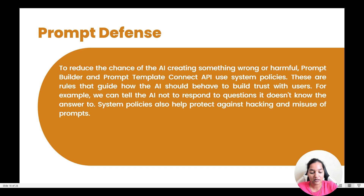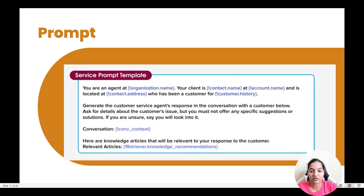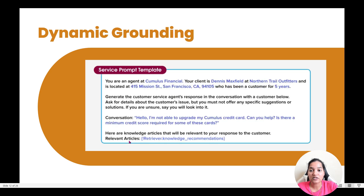Now if I go back here to the prompt, you can see this was the original template. It has information like organization name, contact name, account name, contact address, customer history, and then the conversation context and knowledge article. These are some of the placeholders we are using. During the process of dynamic grounding, everything which is a placeholder has been replaced with the data from the CRM.